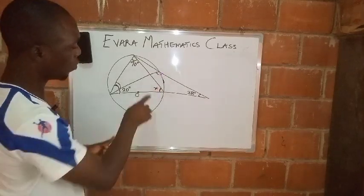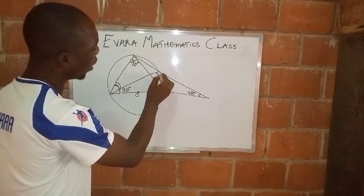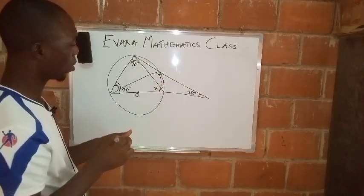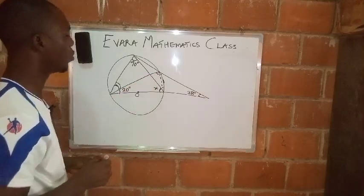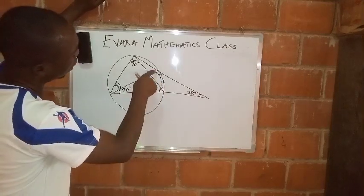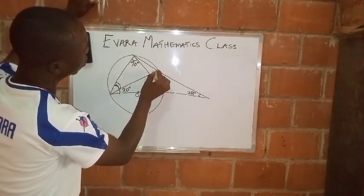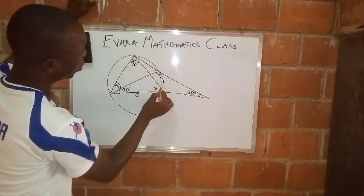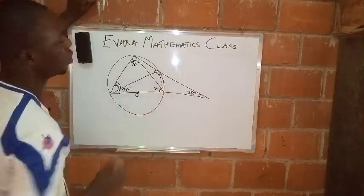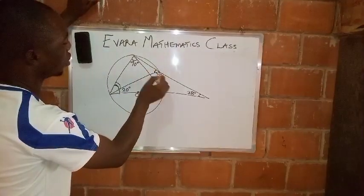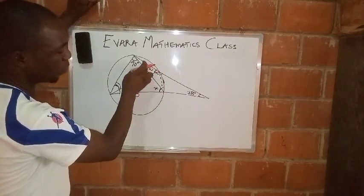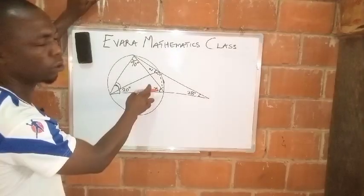If you look at this angle very carefully, we have a chord here. So if we have a chord here, this angle and this one are equal. This angle and this angle are equal, so if you label this one as w — if you know the value of this angle, that automatically gives us the value of this angle.